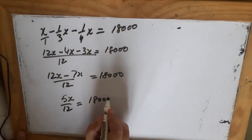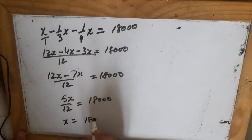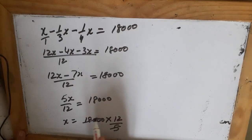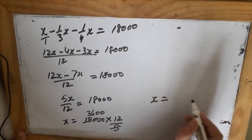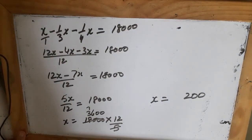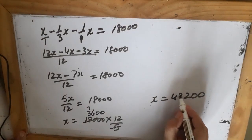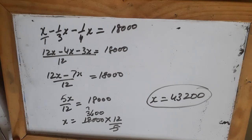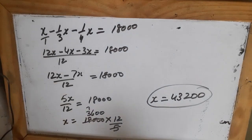So 5x upon 12 equals 18,000. To find x, multiply both sides by 12/5: x equals 18,000 multiplied by 12 upon 5. That gives x equals 43,200. So the total property of the man is Rs. 43,200.